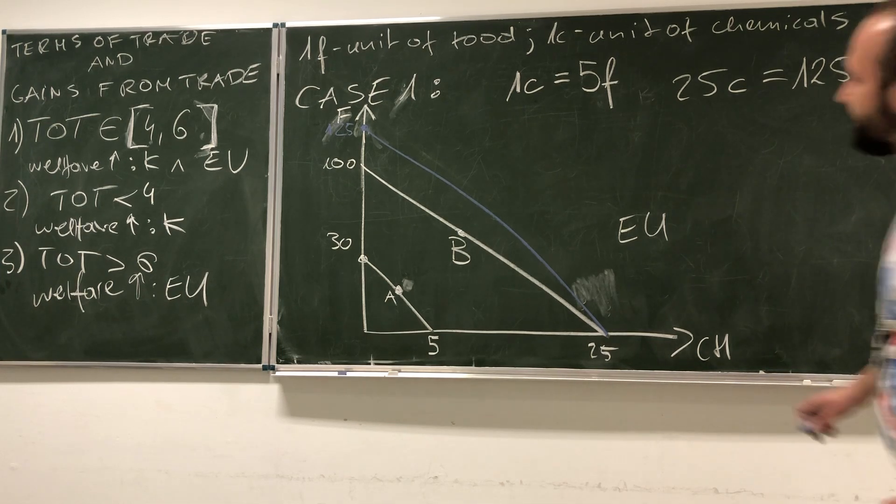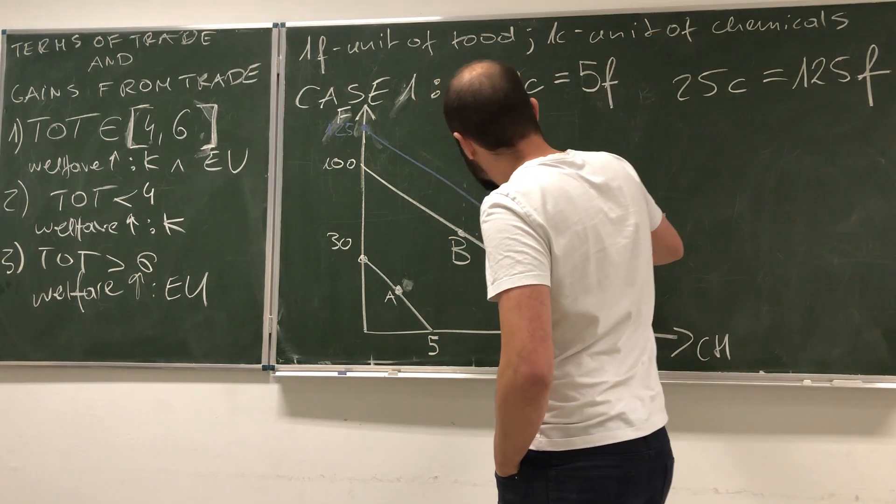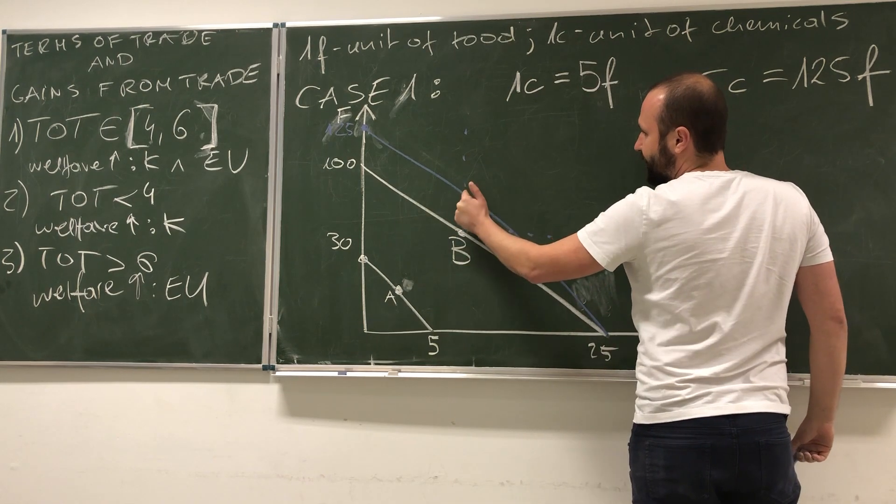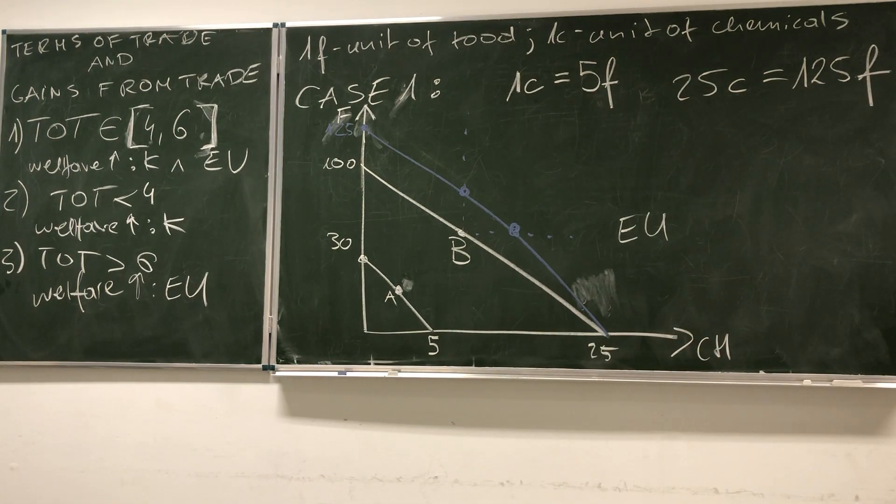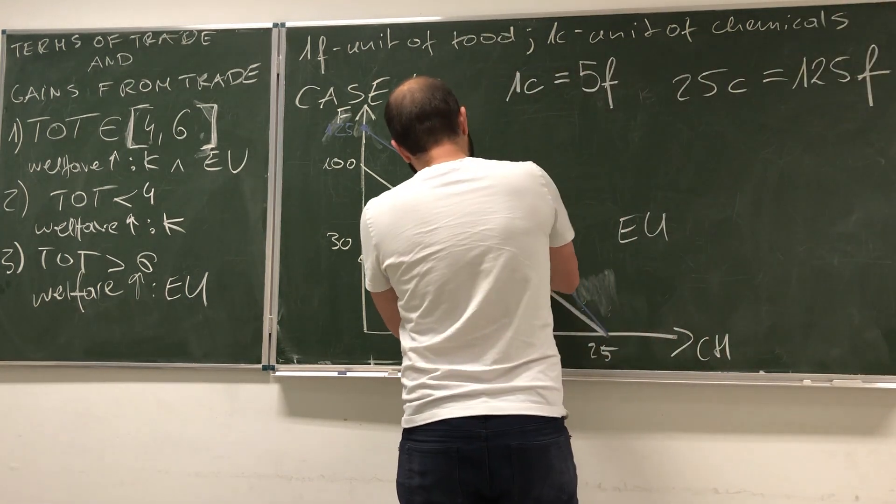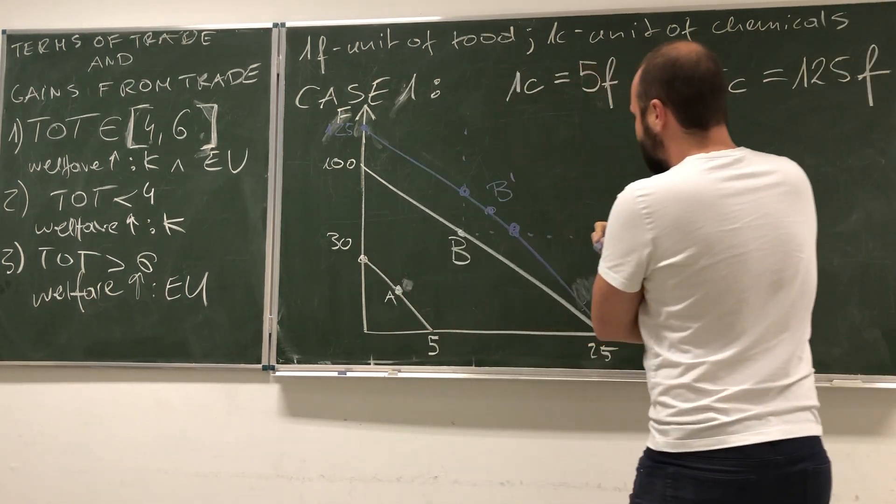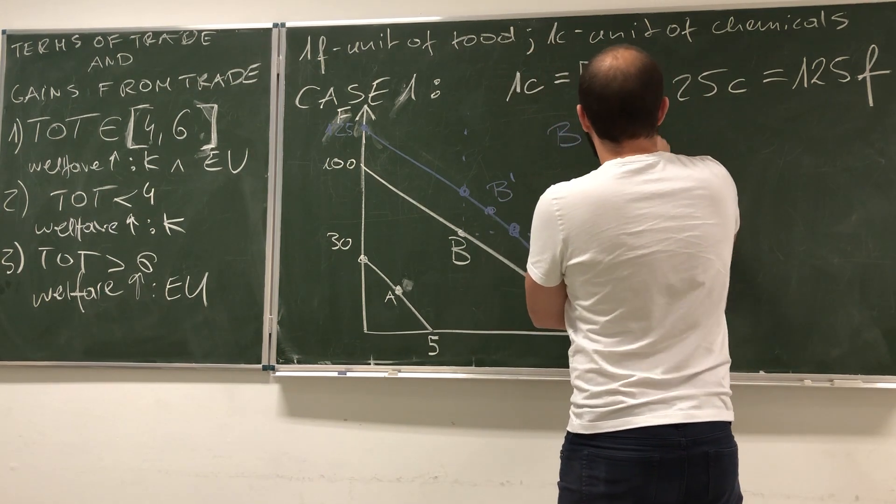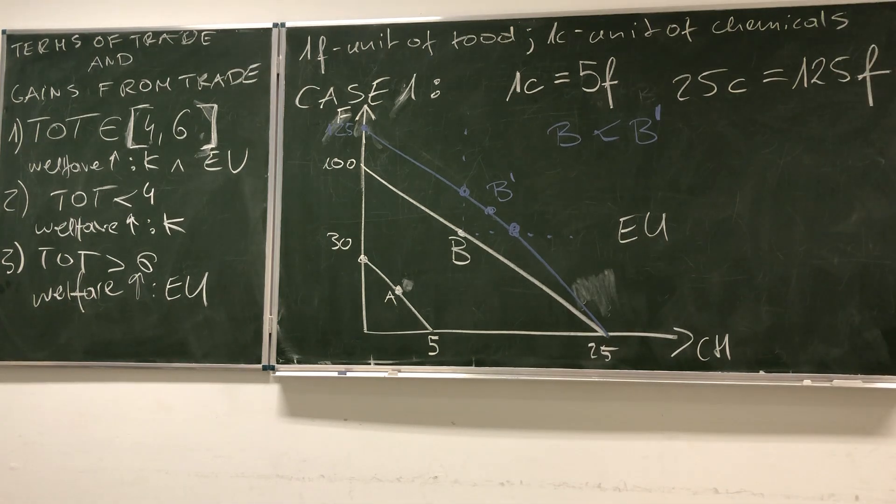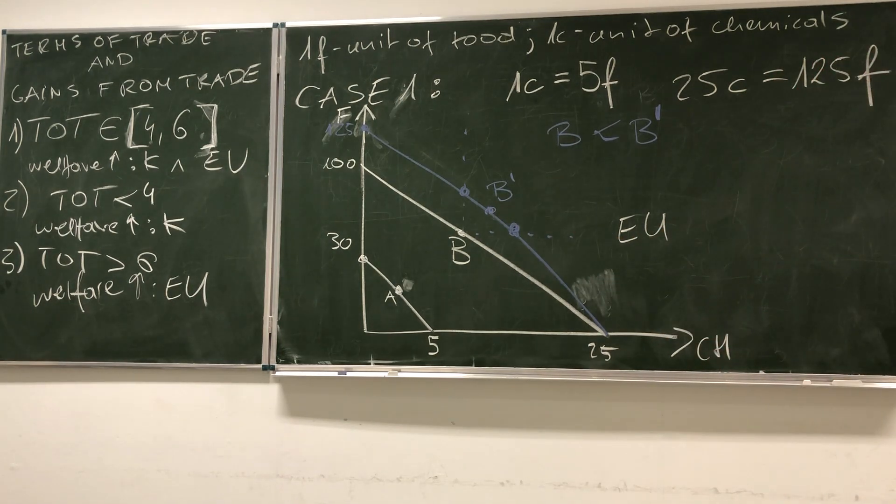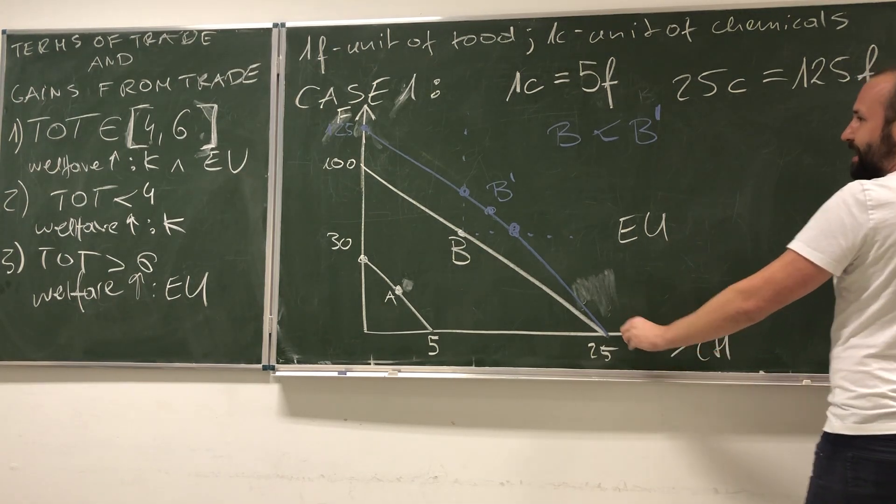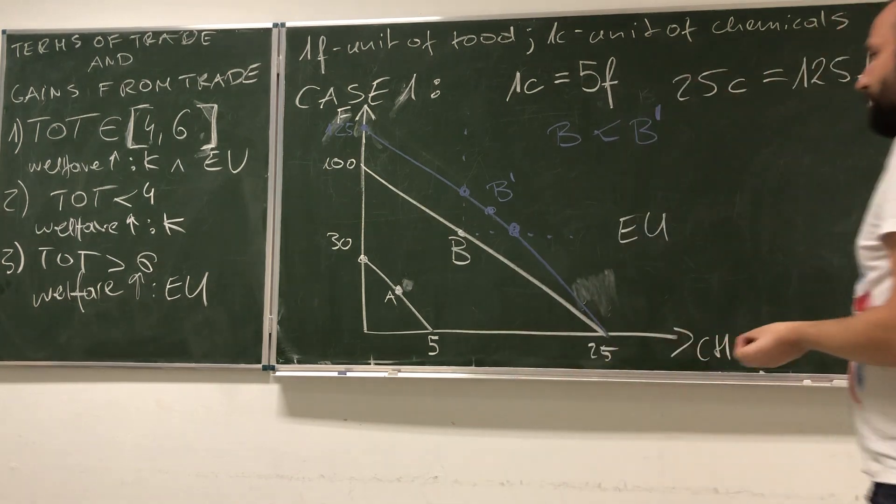Thanks to international trade, we are obtaining new production possibility frontier. European Union is now able to have either 125 units of food and every combination in between until 25 units of chemicals. We can clearly see that each combination lying from here to here will be associated with higher welfare for the European Union.